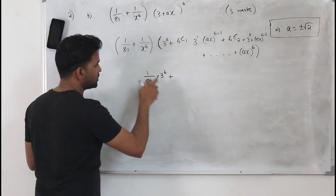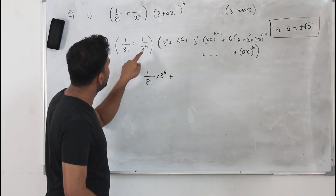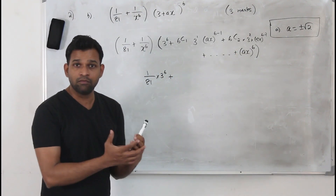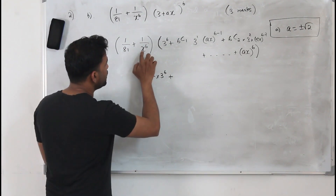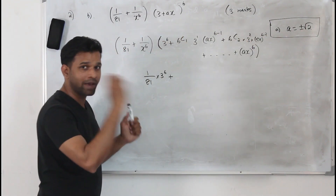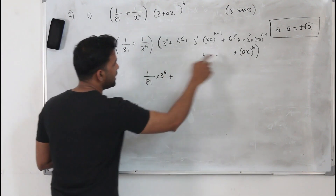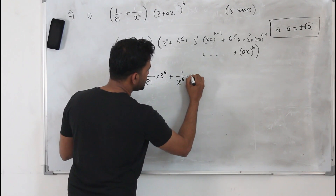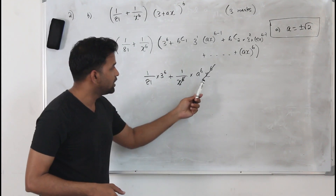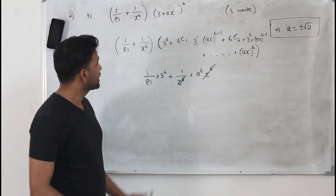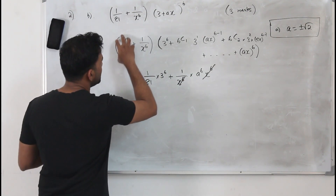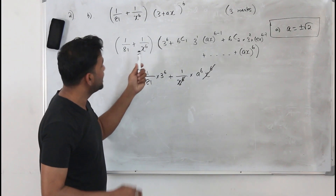Now we multiply 1/x^6 by all terms. You might wonder why we bother — we're looking for a term without x. The reason is: when you multiply 1/x^6 by the last term (ax)^6, the x^6 cancels, leaving a term independent of x. You must be careful and not jump to conclusions — that's the tricky part.